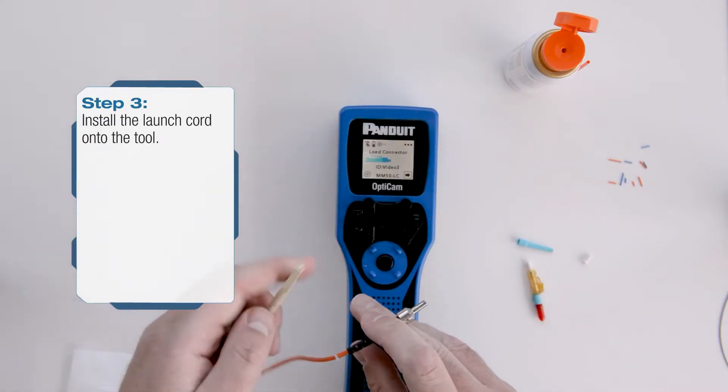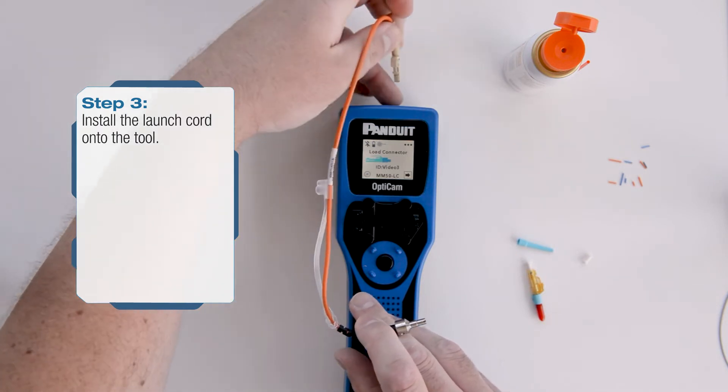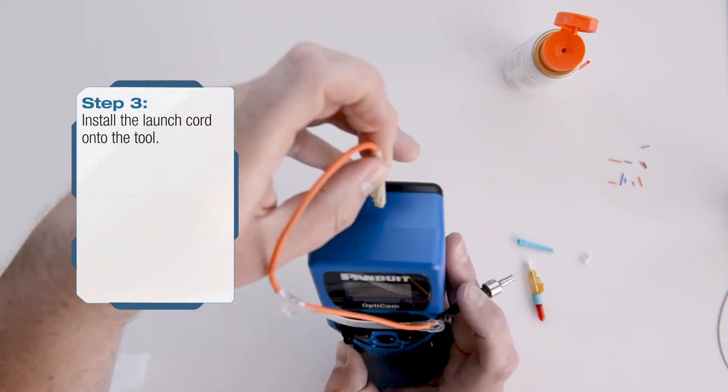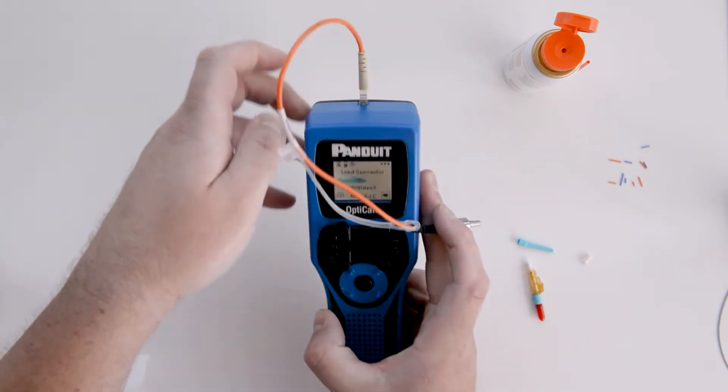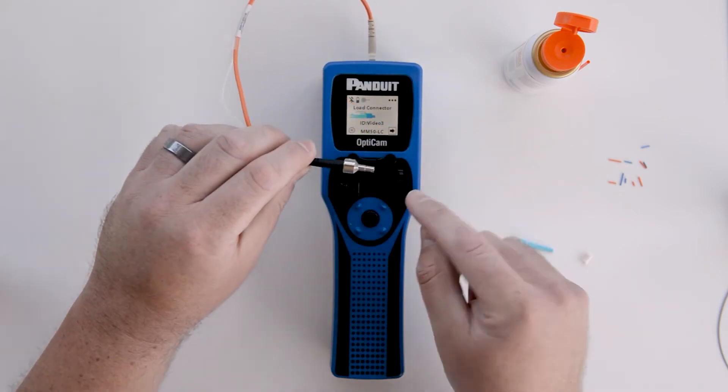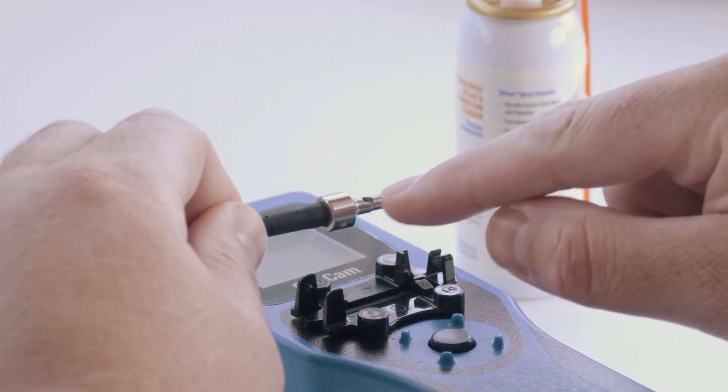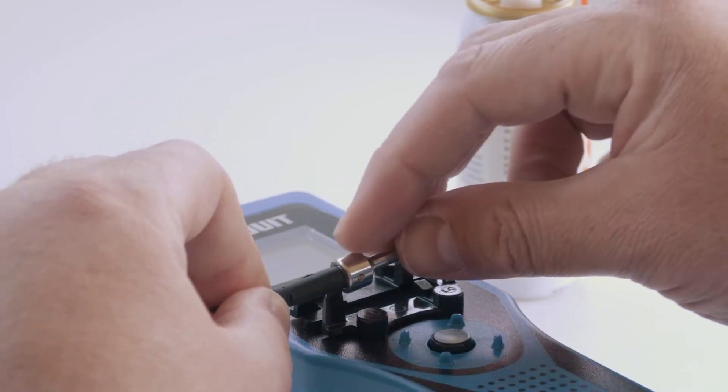Insert the LC connector into the port on the top of the tool. Next, lock the adapter into the appropriate cradle, ensuring that the circular aperture faces down toward the tool.